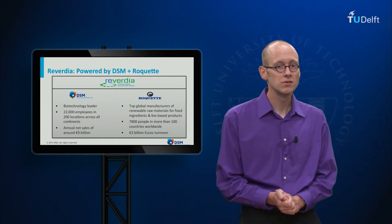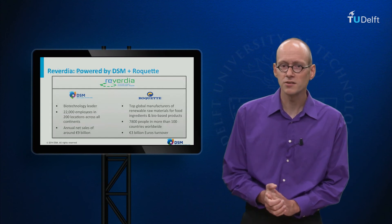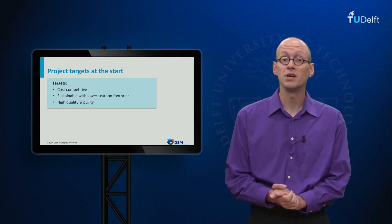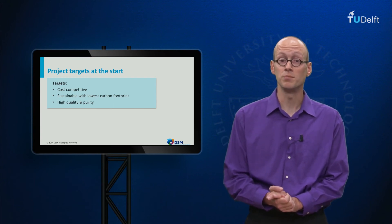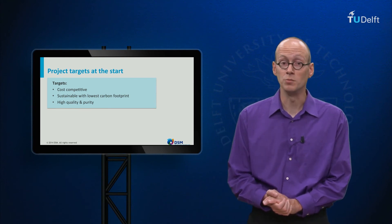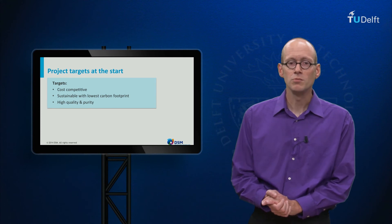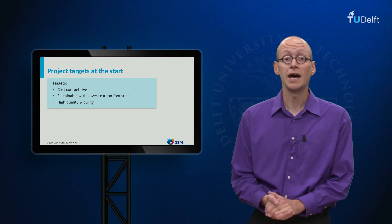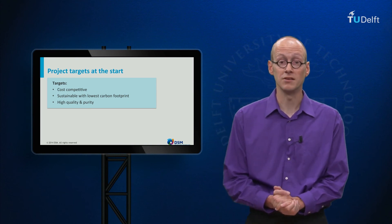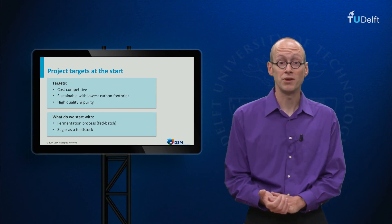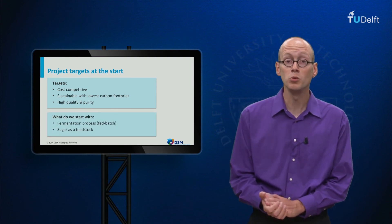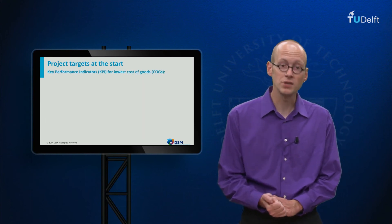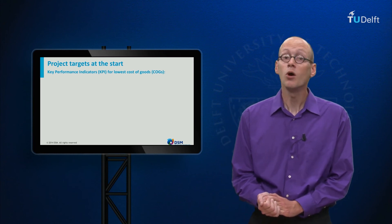So, how did we approach this bio-based succinic acid production project? Really, at the start of the project, targets for the production process were defined. The first target is to develop a fermentation-based process that is at least cost-competitive with petrochemical-based succinic acid, otherwise there would be no demand. Secondly, we want the most sustainable process possible, with the lowest carbon footprint. Thirdly, we need a high-quality product, essential for our envisaged polymer applications. To accomplish this, we chose a fed-batch fermentation process with renewable sugar as feedstock. To realize the lowest possible costs, we defined several key performance indicators that impact the overall cost price, also known as cost of goods.